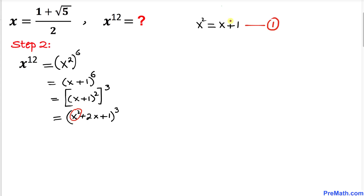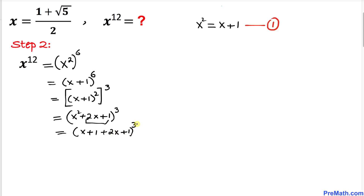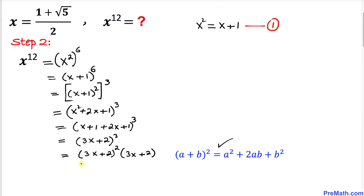Now wherever we see x², I replace it with x plus 1 from Equation 1. So x² + 2x + 1 becomes (x+1) + 2x + 1, which simplifies to 3x + 2. So we now have (3x + 2)^3. I rewrite this as (3x+2)² times (3x+2)^1, and applying the (a+b)² formula to the first part gives 9x² + 12x + 4, multiplied by (3x + 2).